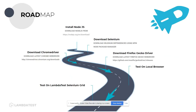In this video we are going to look into how to install and download Node.js, then download Selenium using npm as Node Package Manager, and also download and install other dependencies such as ChromeDriver and Firefox GeckoDriver. Then we are going to write the first piece of code that will automate a simple logic, and then run that on the LambdaTest Selenium Grid as well.